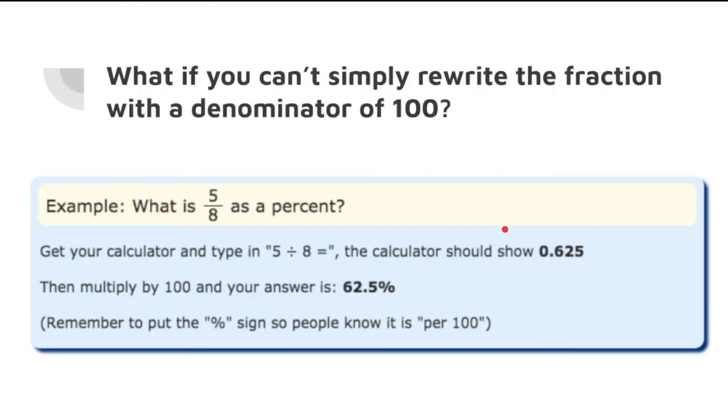Now, what if you can't simply rewrite the fraction with the denominator of 100? So for example, 5 eighths. It's quite difficult to express or rewrite this fraction with the denominator of 100.